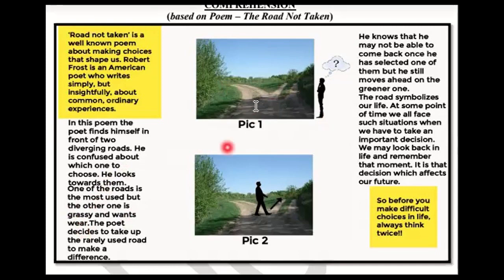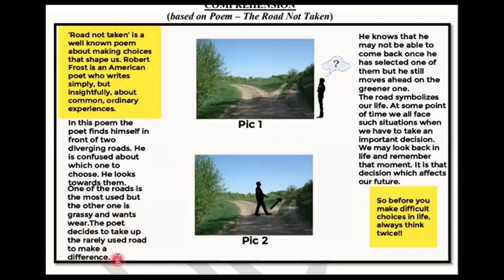One road has been used a lot, and the other is grassy because people are not going there. 'Wants wear' means that road wants to be used and made the most-used path. Robert Frost is confused about which way to go. The poet decides to take up the rarely used road to make a difference.